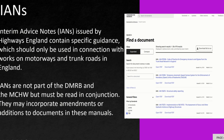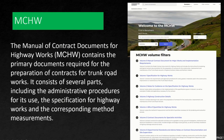The next reference is MCHW — the Manual of Contract Documents for Highway Works. It is mainly used for preparation of contracts for roads. It covers administrative procedures, specifications for highway works, and corresponding methods of measurement. It consists of several volumes, from Volume 0 to Volume 6.